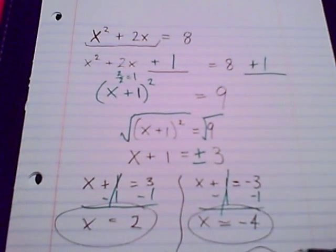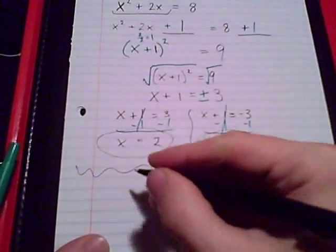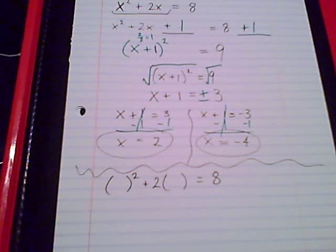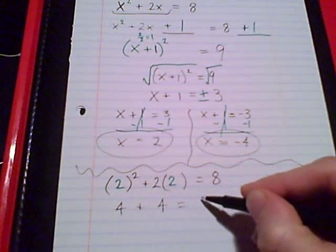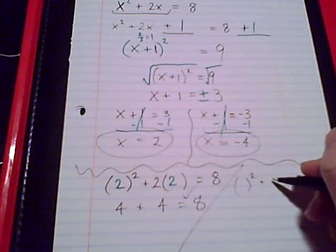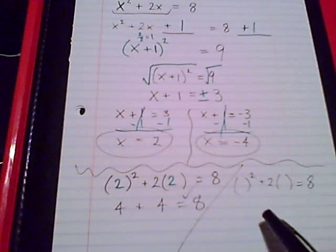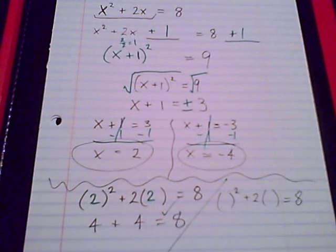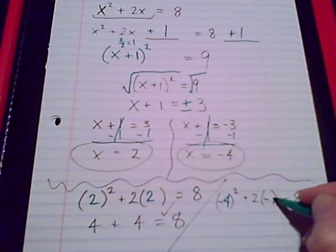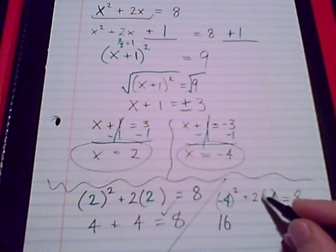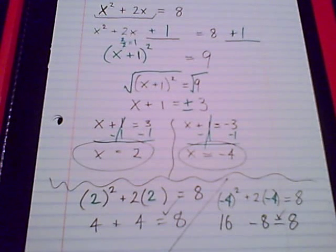Is completing the square your first choice? That's up to you. Let's go ahead and check these answers, just for fun. Let's check x equals 2: 2 to the second power is 4, and 4 plus 4 equals 8 — nice. Let's check x equals negative 4 in x squared plus 2x equals 8. Negative 4 to the second power is positive 16, and 2 times negative 4 is negative 8. 16 plus negative 8 equals 8 — for sure. Both answers checked out.